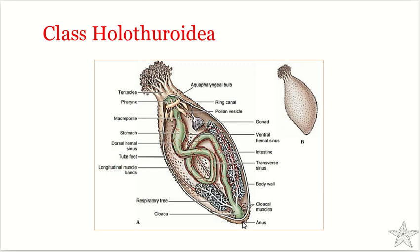Sea cucumbers thrust their tentacles into their mouths to wipe off trapped food. During digestion, coelomocytes move across the intestinal wall, secrete enzymes to aid in digestion, and engulf and distribute the products of digestion — helping in the transport, absorption, and digestion of nutrients. The coelom is very large, and cilia of the coelomic canal help circulate fluid throughout the body cavity.